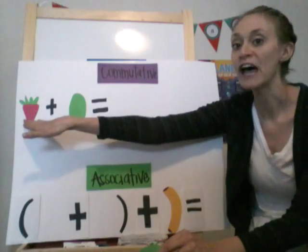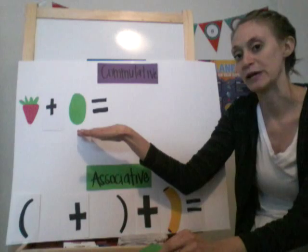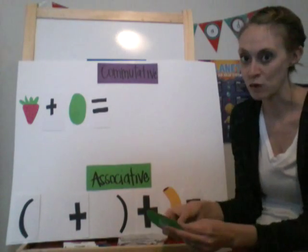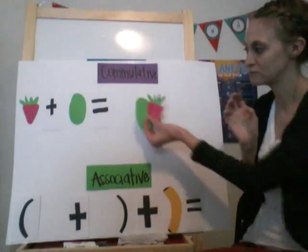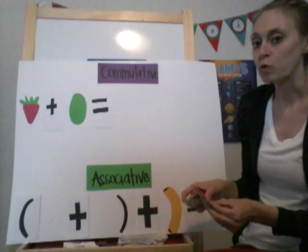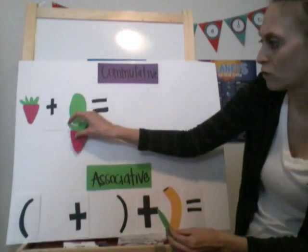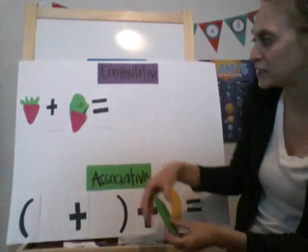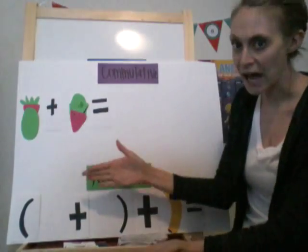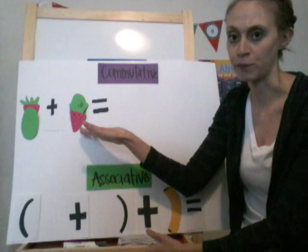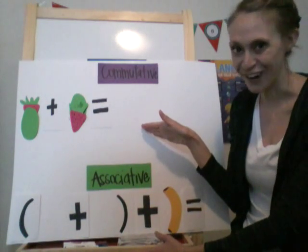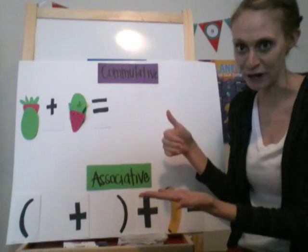Right here I have a strawberry and I have a kiwi. If I add my strawberry and my kiwi together, what do I have total? I have a strawberry and a kiwi. Well, what if I switch my order? Now I have a kiwi plus a strawberry. Does that change my answer? No, I still have a kiwi and a strawberry.